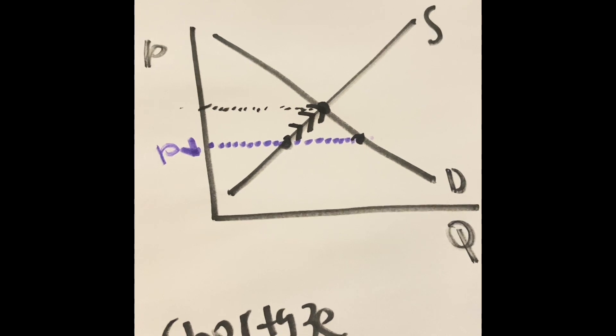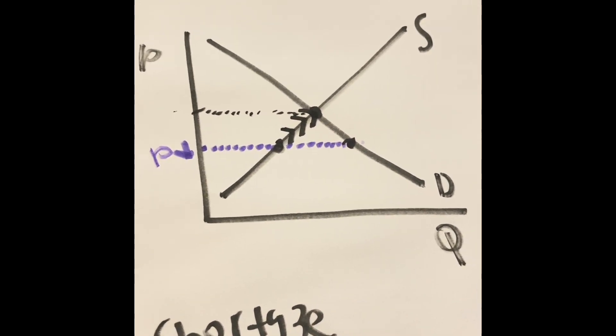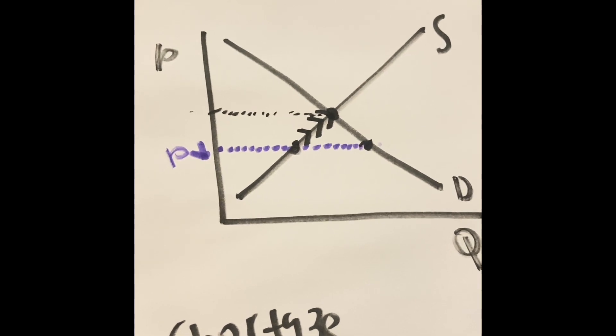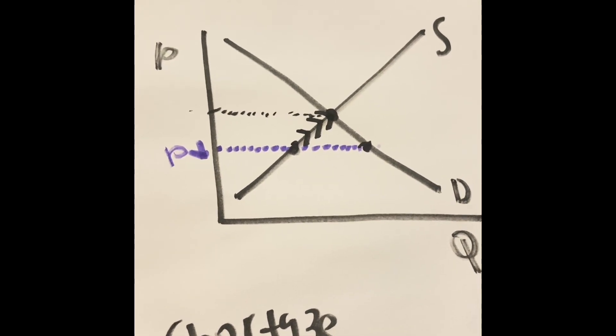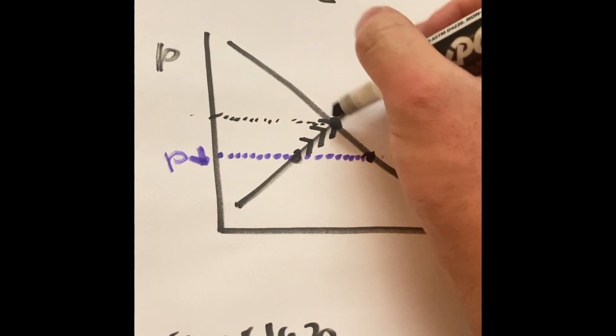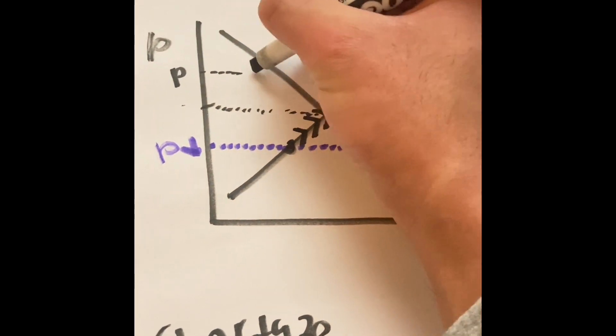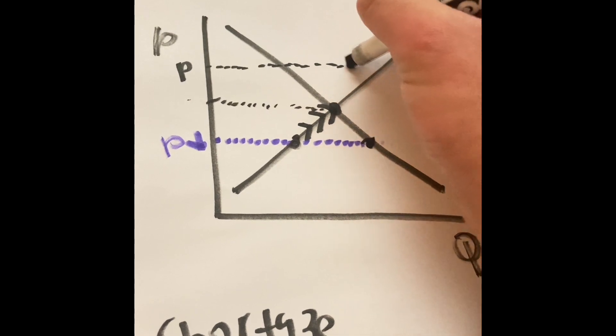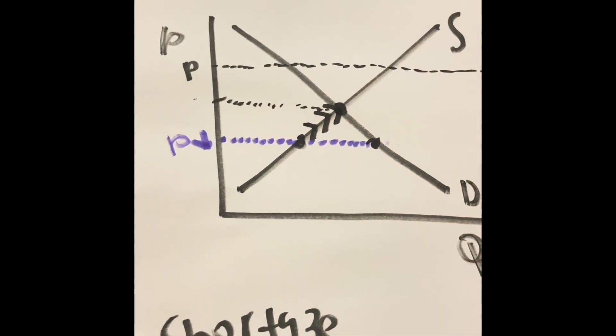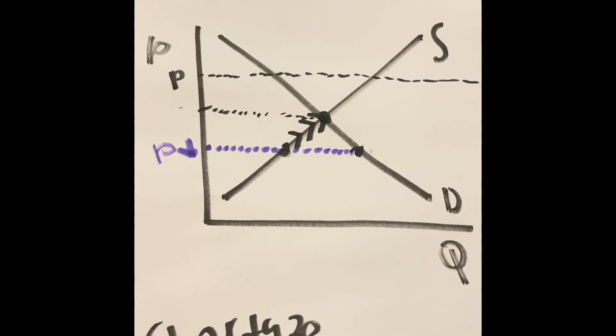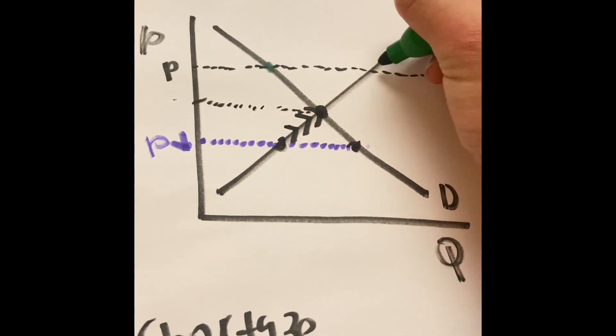The solution for a shortage is increase the price per unit. But what happens if we increase the price? If we start here and the company decides to put P up here, draw a line up here and see what happens.